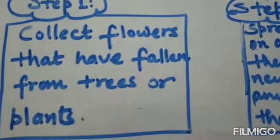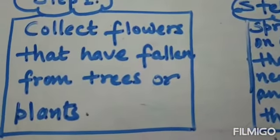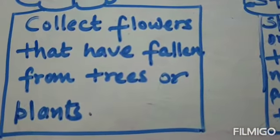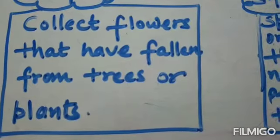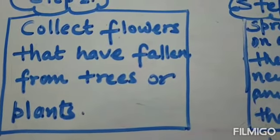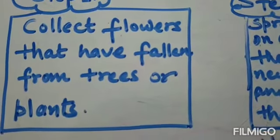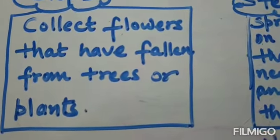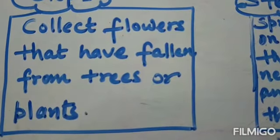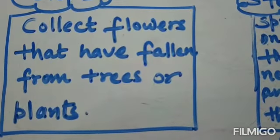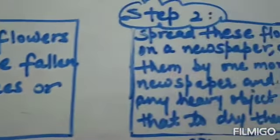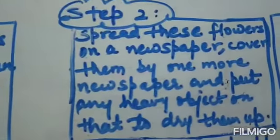Step 1 is that you have to collect the flowers that have fallen from the trees or the plants. The flowers should be in good condition, they should not be rotten, and then you have to bring them to your home.